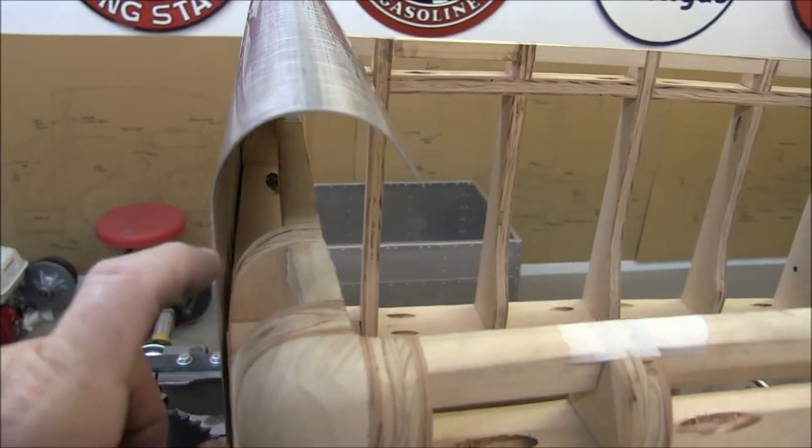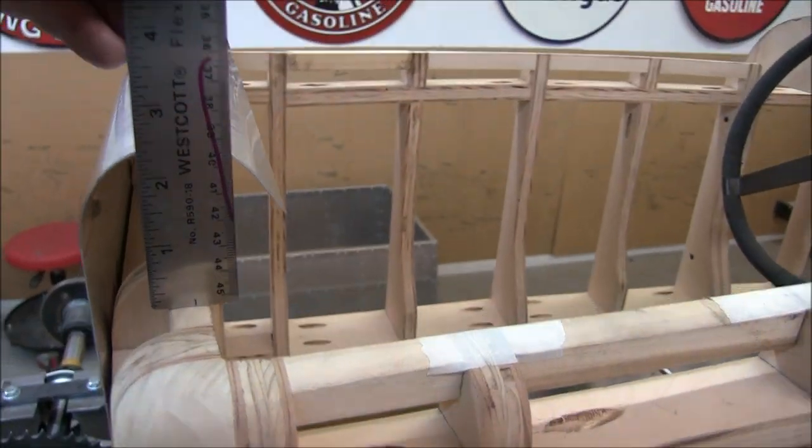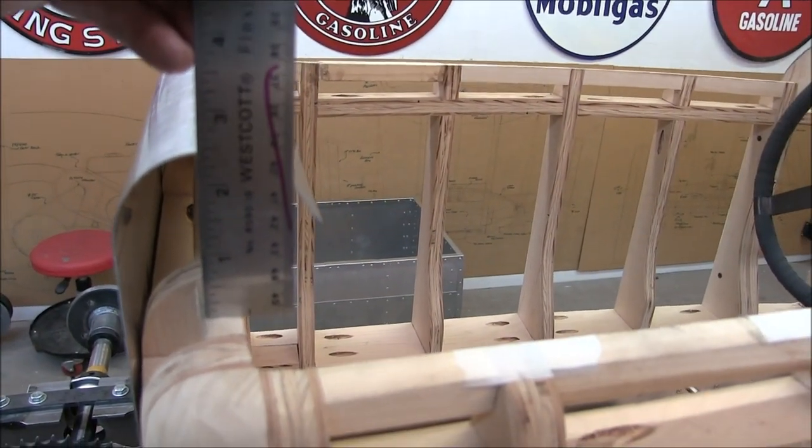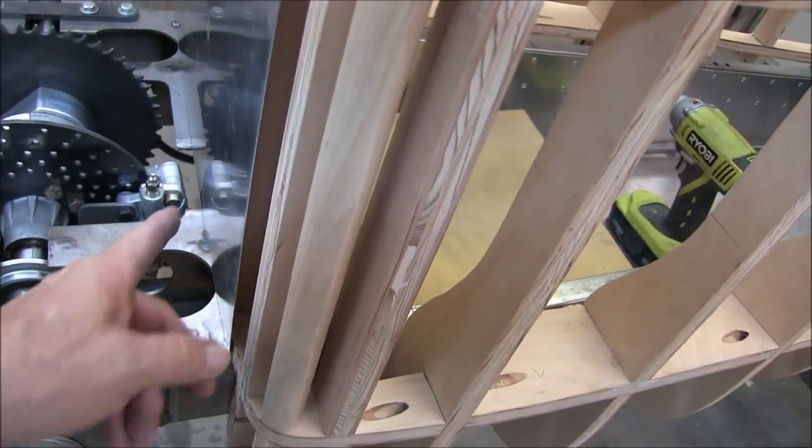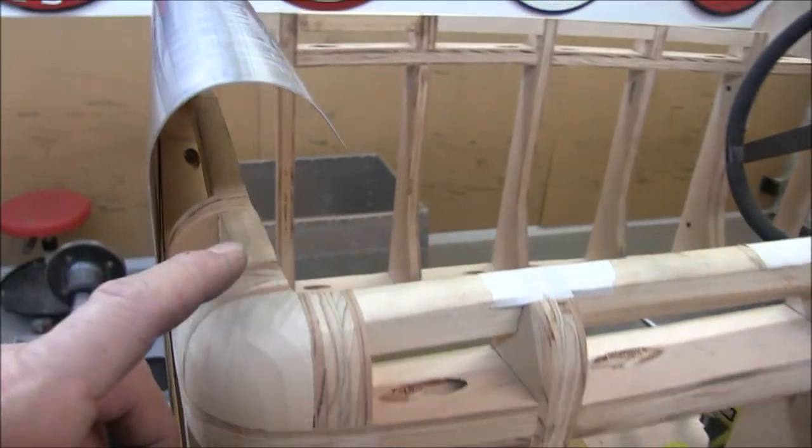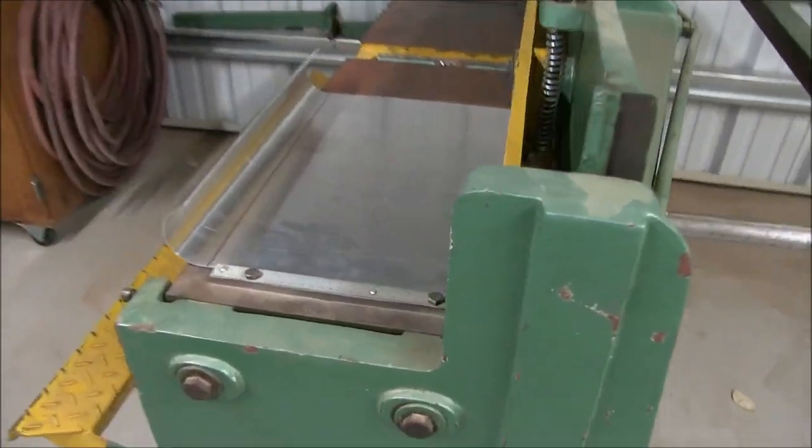Alright, so now I have to trim it to length. That looks to be, if I take two and a half inches, I'll use the foot shear, knock off two and a half inches and let that sit down on here. I have the piece in the foot shear, I've got it right on the line, right where I want it.